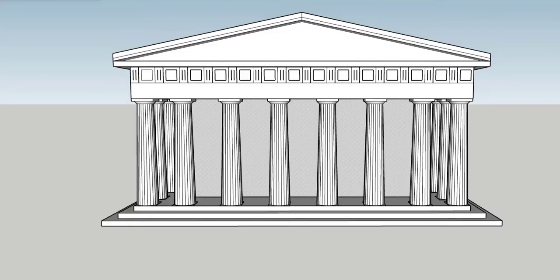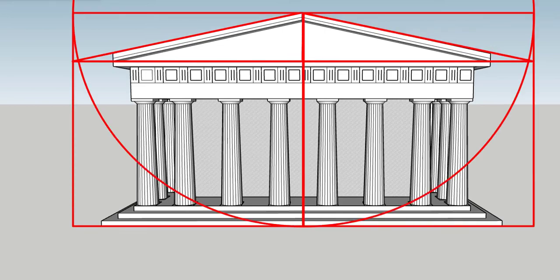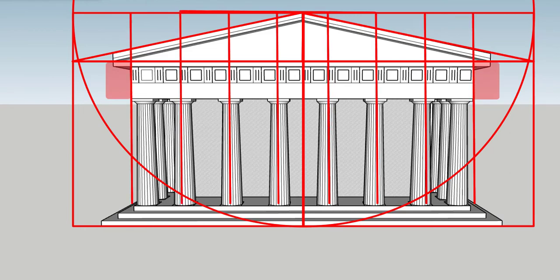However, if we needed to add the truncated part of the pediment triangle back in, in order to see the enclosing double square of the facade, then it makes sense that we would also add back in the two half intercolumnar distances that were dropped for structural reasons from the entablature of the facade.